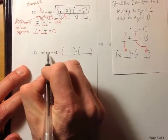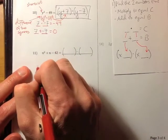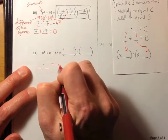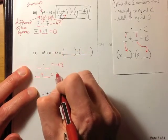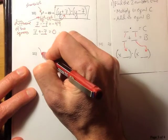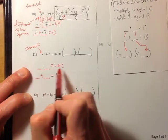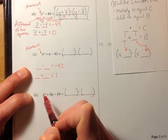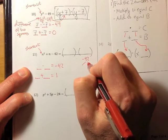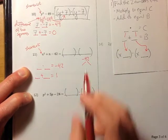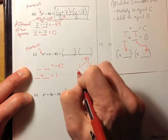Let's move on to number 11: N squared plus N minus 42. We want to find two numbers that multiply to equal negative 42 and add to equal invisible positive 1. We can use the shortcut here. If nothing is immediately popping out to you, come over here and make a list of factor pairs of negative 42, starting with 1. 1 times what gives negative 42? Well, negative 42. And then flip the signs.